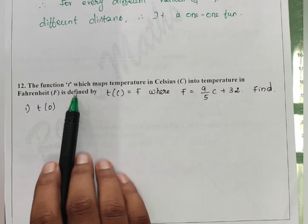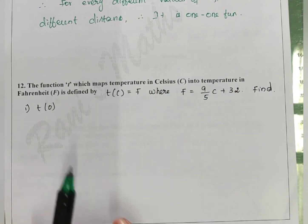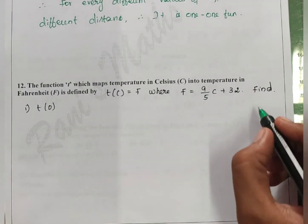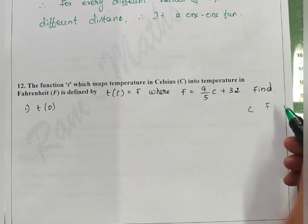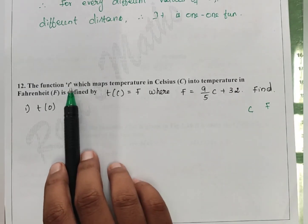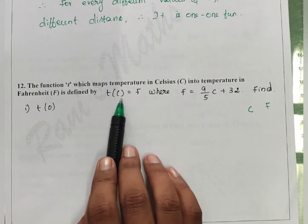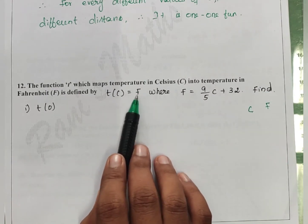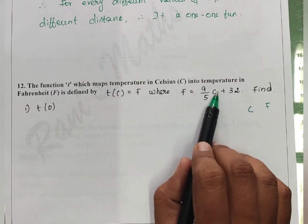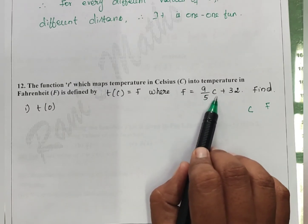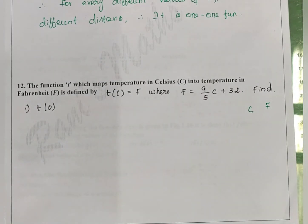The function t which maps temperature in Celsius to temperature in Fahrenheit: t of C equals F, where F in terms of Celsius is 9 by 5 into Celsius plus 32. Find t(0).